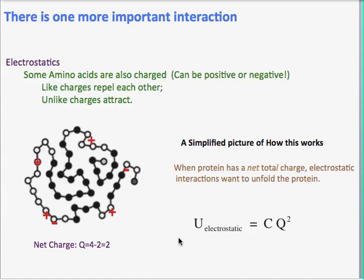And it turns out the electrostatic charges are going to try to repel each other. So this electrostatic force is more or less destabilizing and tries to make the protein unfold. And it turns out that the electrostatic energy depends on the square of the total charge, which is something that comes from basic physics.